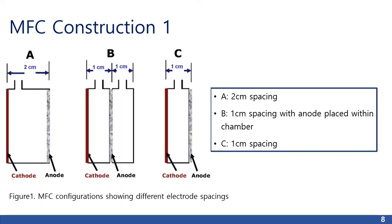MFC construction: the spacing of the anode and cathode in a plexiglass cylinder was varied in order to systematically investigate the effect of electrode spacing on power. For fed batch tests, the anode was set 2 centimeters from the cathode with the anode fixed against a plexiglass wall. The anode was moved to a distance 1 cm from the cathode with either the anode exposed to both sides of the fluid with the total chamber distance of 2 cm, or set at 1 cm with the anode against the plexiglass wall in a chamber only 1 cm long.